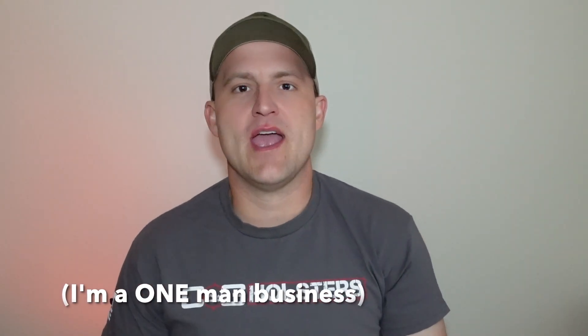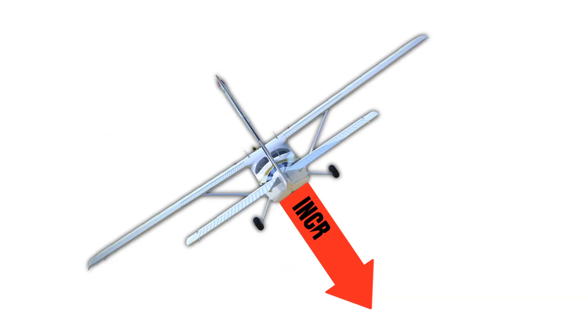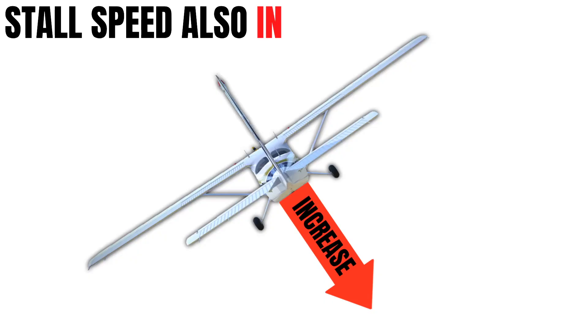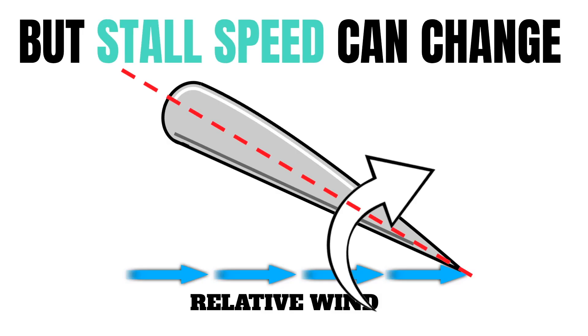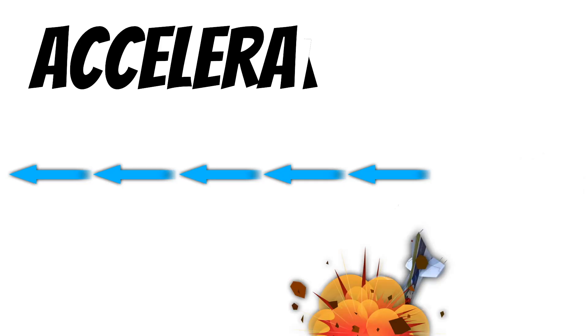Any time we increase the load factor on our airplane, stall speed will also increase. Our airplane always stalls when the wings exceed their critical angle of attack, but the speed at which that happens can change. This is important because if you stall the airplane at a higher airspeed, you're probably not going to be expecting it — and this can be extremely deadly. This is what we call an accelerated stall.